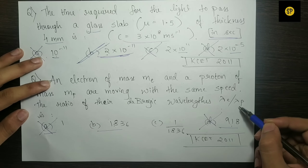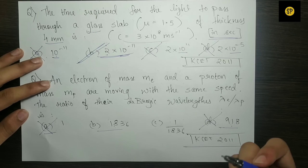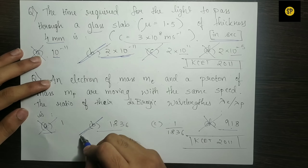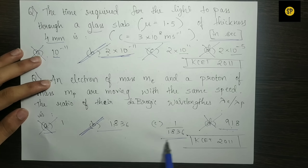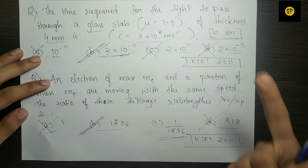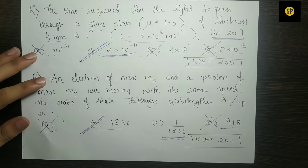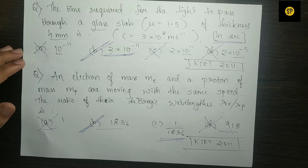If you divide by 2 by mistake, you get 918. But the correct answer should be greater than one. The ratio lambda E by lambda P is 1836, so option B with 1836 is most likely the correct answer. You can intelligently guess option B in this case.